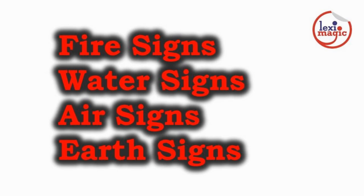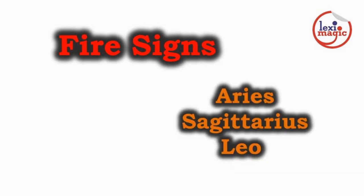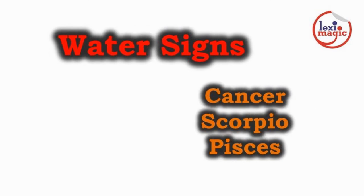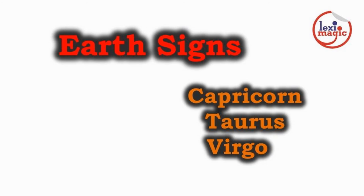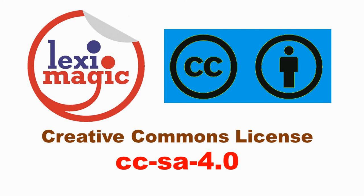The twelve signs are divided into four groups: the fire signs, water signs, air signs, and earth signs. Aries, Sagittarius, and Leo are fire signs. Cancer, Scorpio, and Pisces are water signs. Libra, Aquarius, and Gemini are air signs. Capricorn, Taurus, and Virgo are earth signs.